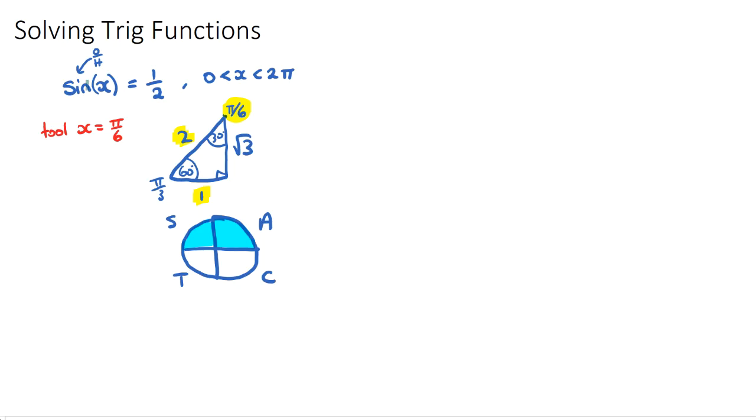So once we know that our trig function here, sine, was positive a half, we need to look at the positive sine quadrants. If this was negative a half, we would be looking at the negative sine quadrants, T and C.